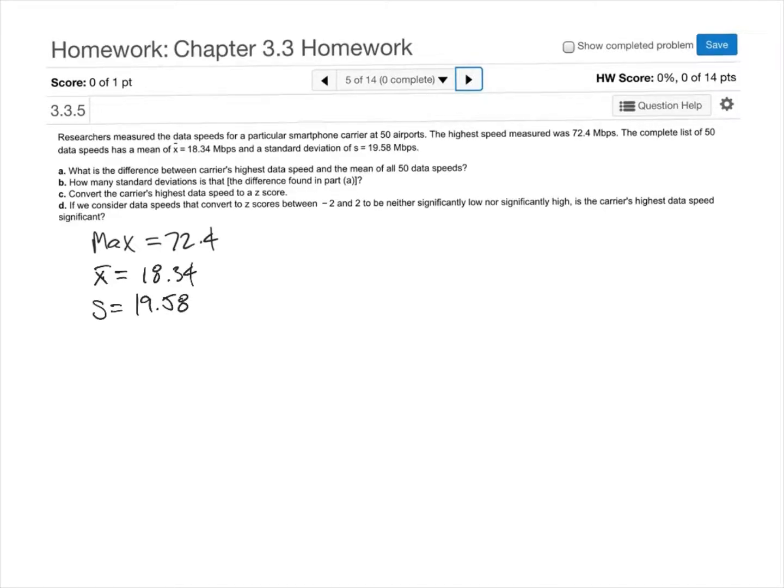The difference between the carrier's highest data speed and the mean of all 50 data speeds we would find by subtracting the mean from the maximum value. So we will have 72.4 minus 18.34. This difference is 54.06.